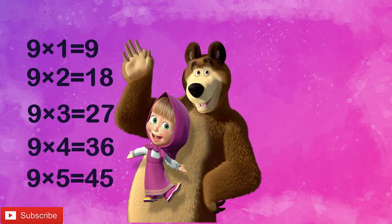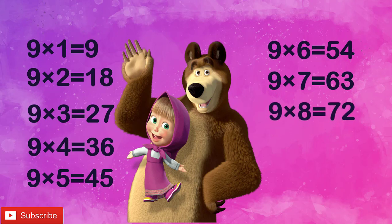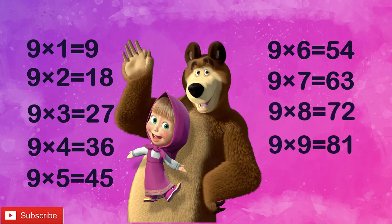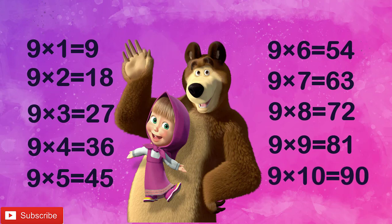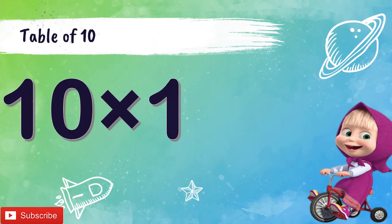Let's revise children. 9 1's are 9, 9 2's are 18, 9 3's are 27, 9 4's are 36, 9 5's are 45, 9 6's are 54, 9 7's are 63, 9 8's are 72, 9 9's are 81, 9 10's are 90.